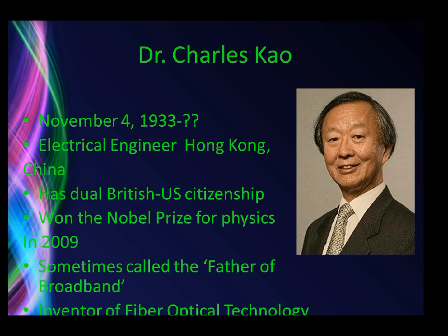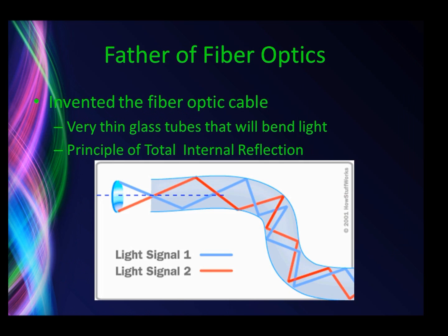Without this man's work we would not have the internet or digital phones the way we do now. He was the first inventor of the fiber optic cable, using what we now know as the principle of total internal reflection. A fiber optic cable is a very thin glass tube — sometimes made of optically perfect plastic — and it can bend.